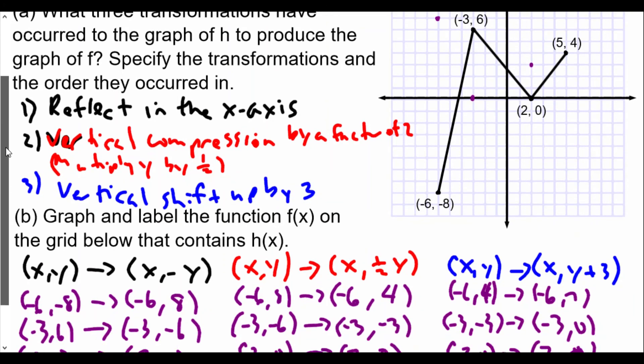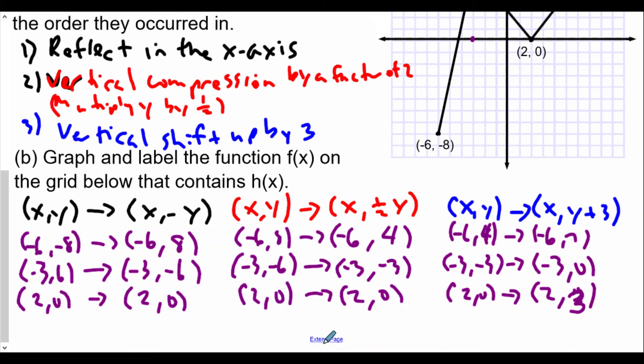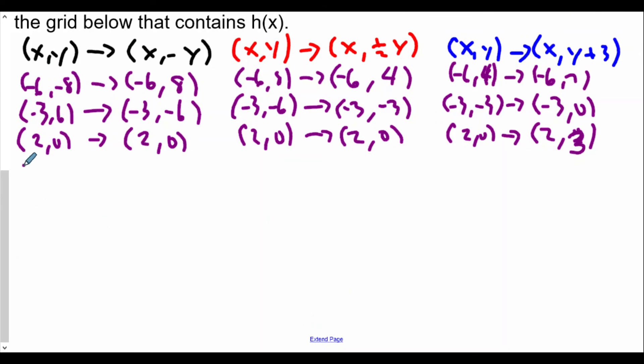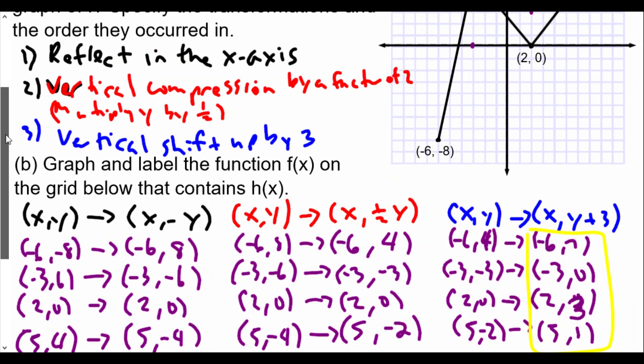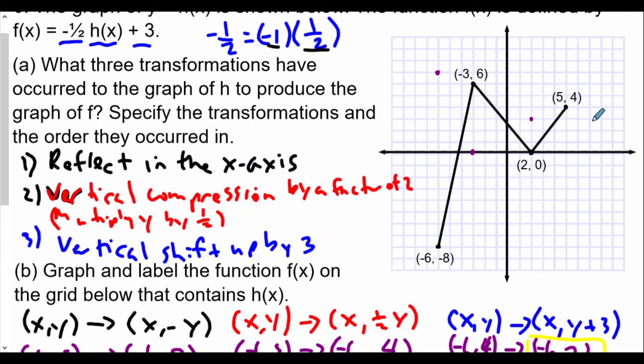The final coordinate is 5 comma 4. x stays the same, y is negated, so 5 comma negative 4. We now take this point and keep x the same, and the y value is multiplied by 1 half. So we have 5 comma negative 2. And now 5 comma negative 2, we add 3 to the y value, becomes 5 comma 1. All these are the final coordinates after all the transformations. 5 comma 1 is right here.